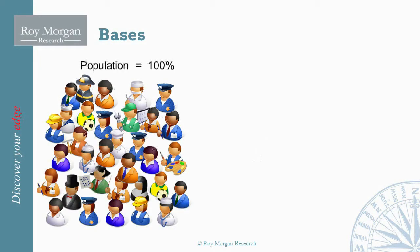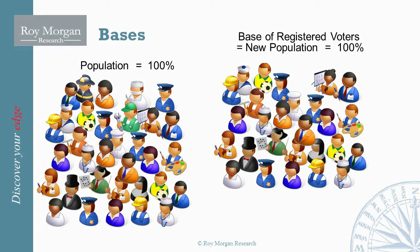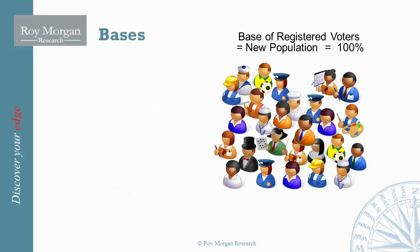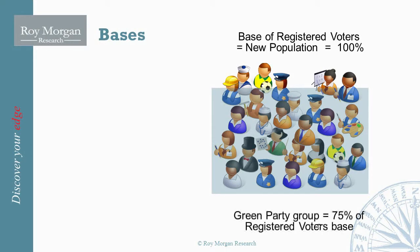Let's say this is our population, which equals 100%. Out of these, 80% are registered voters. We take that group and they become the new population. Our registered voters becomes our base, so they become 100%, and of that 100%, green party equals 75% — and this is of the registered voters base.